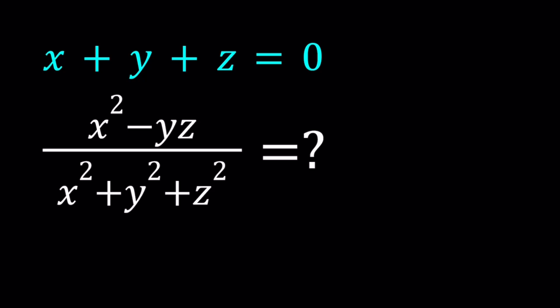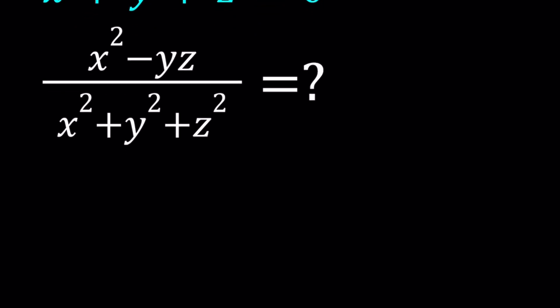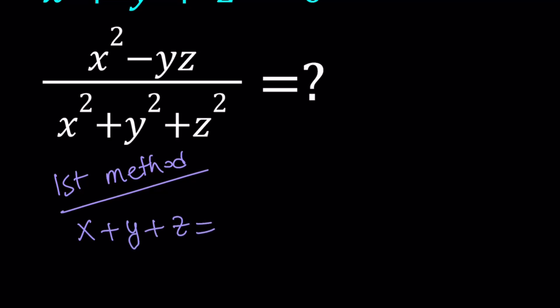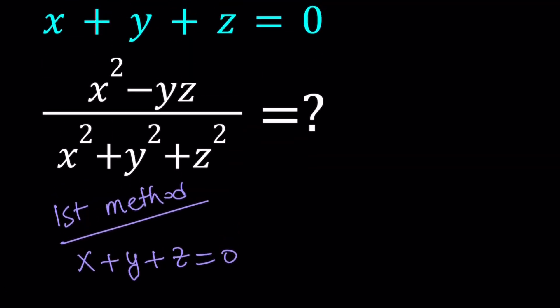I'll be presenting two methods, and let's start with the first one. For the first method, I'm going to start off with x plus y plus z equals 0, because that's what we're given. And then I'm going to go ahead and isolate y plus z. The reason why I go with y plus z is I do have a yz in the numerator, so it makes sense to put the y and z together so we can get something that looks like yz.